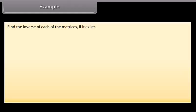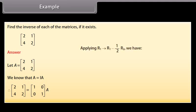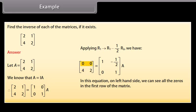Example: Find the inverse of the given matrix A, row-wise: 1st row [2, 1], 2nd row [4, 2]. We write A alongside the identity matrix I as the augmented matrix. After performing row operations, we can see all zeros in the first row of the matrix on the left-hand side. Therefore, A inverse does not exist.